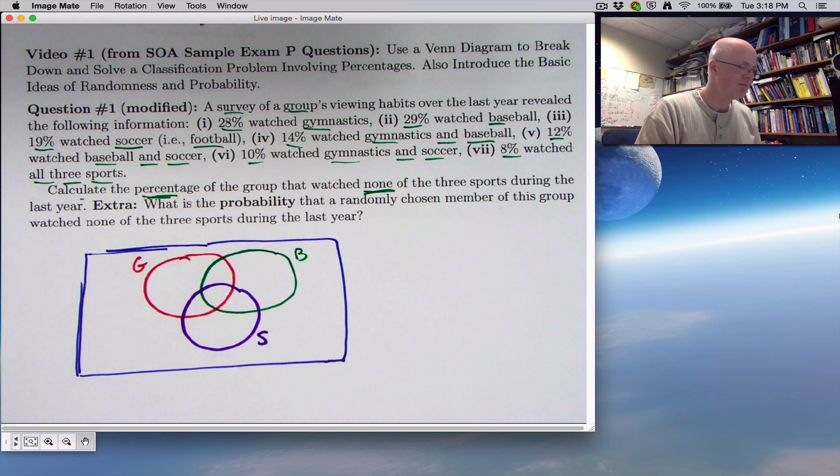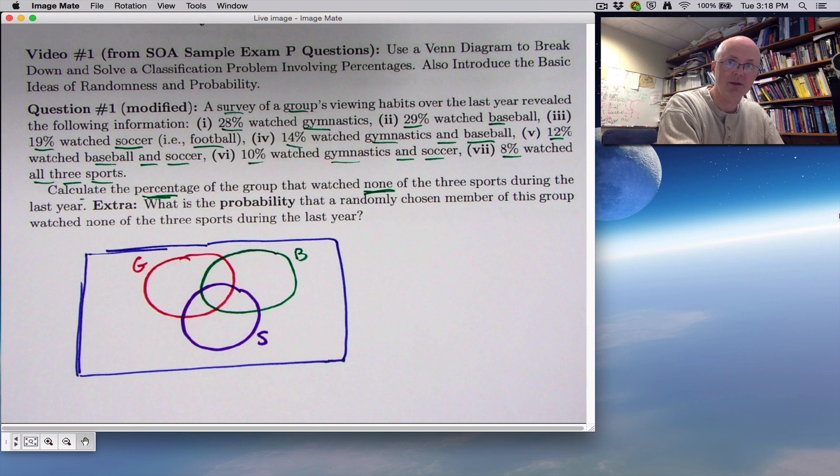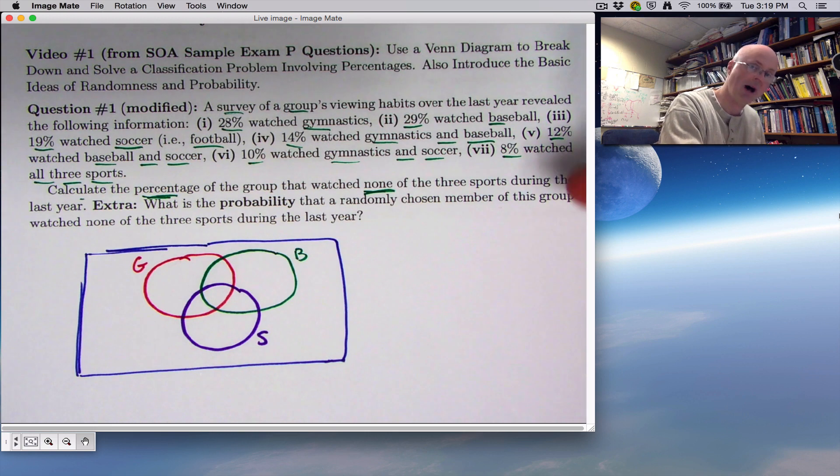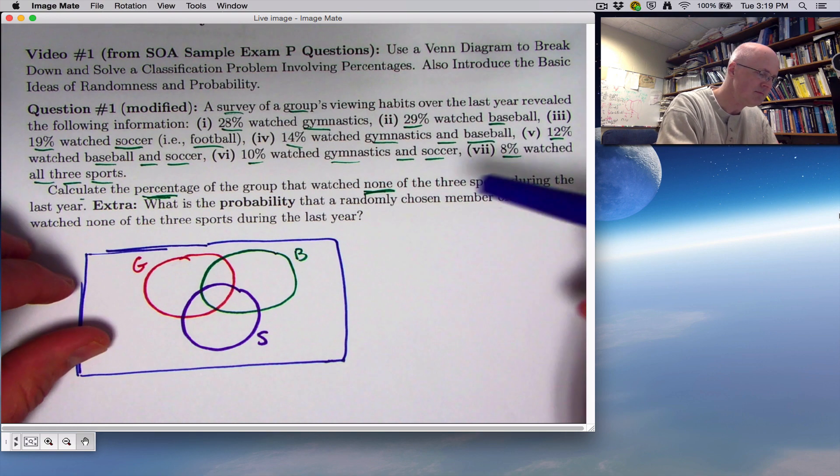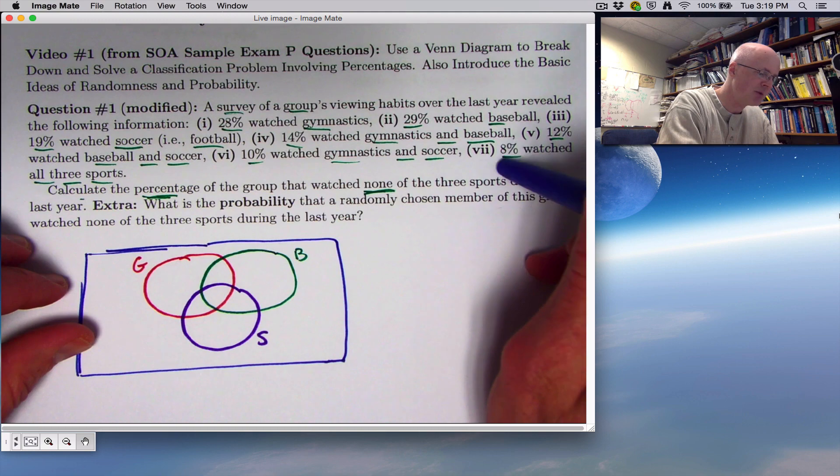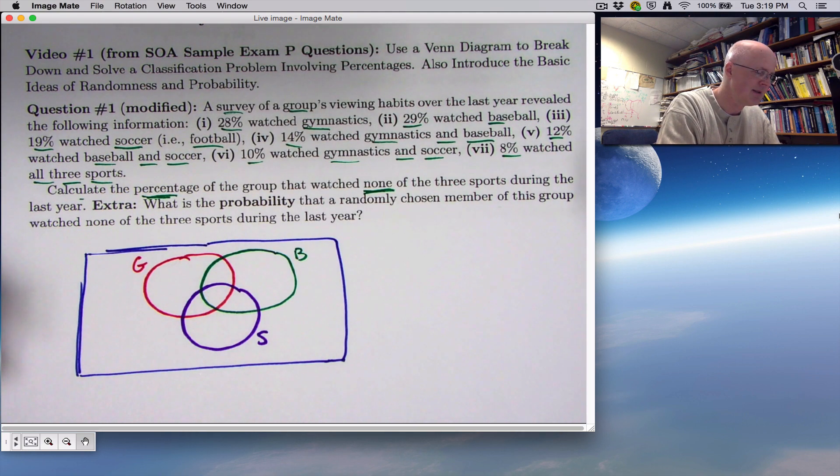Now, it's tempting to think that you should go through this list of information in the order that's given. However, if it's phrased this way, in this kind of problem, you want to start from the bottom and work your way up. You want to start with the information that is most specific, so to speak. In this case, 8% watched all three sports. That's the most specific. It's the most detailed, you might say. You're saying those people watched all three.